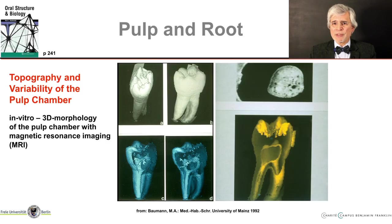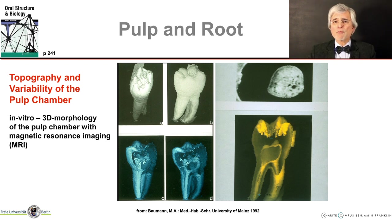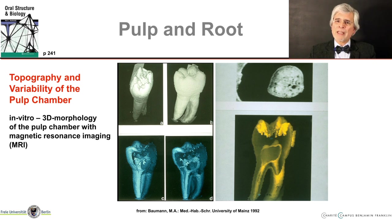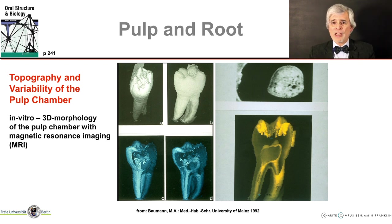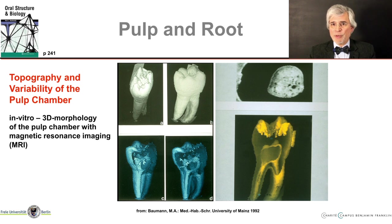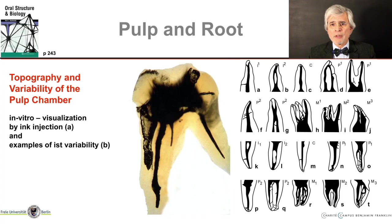A two-dimensional image is not fully satisfying, which is why research approaches showing the pulp in its real spatial extension are very promising. A selection of images from Professor Michael Baumann's habilitation thesis shows in vitro magnetic resonance tomographies dating back to 1992. Hopefully, technical developments will progress so that such imaging can be used as routine diagnostics in practice — it would be better to know exactly what to expect in your patient before starting treatment. The variability of root canals and lateral canals is incredibly large, as shown by preparations with ink injections and schematic illustrations.